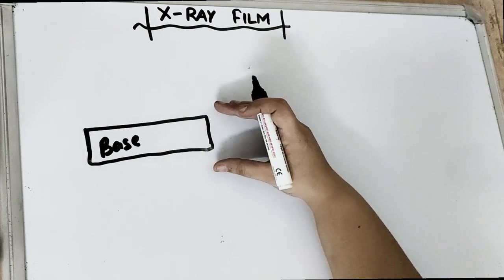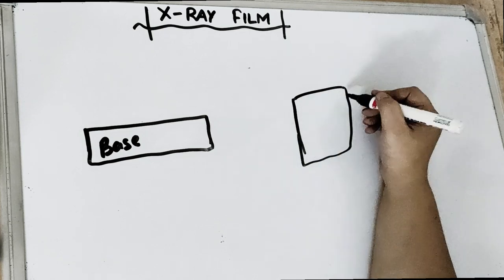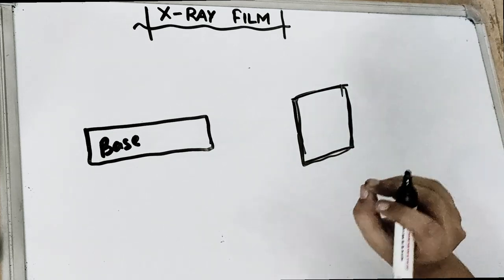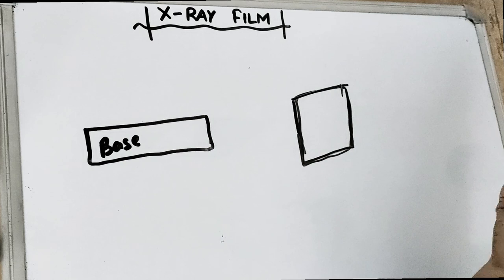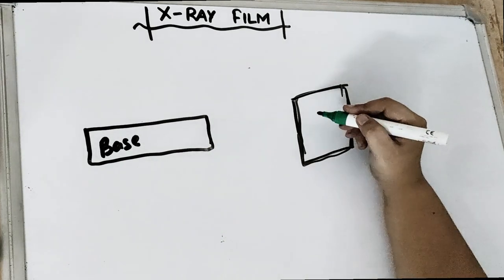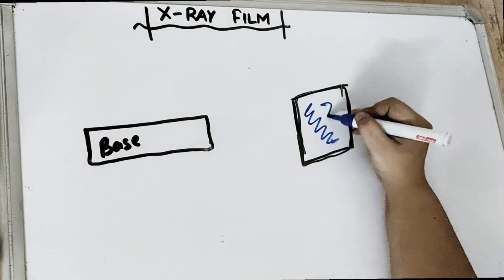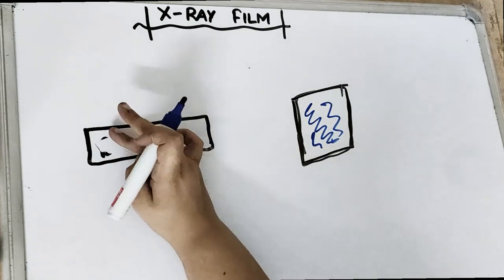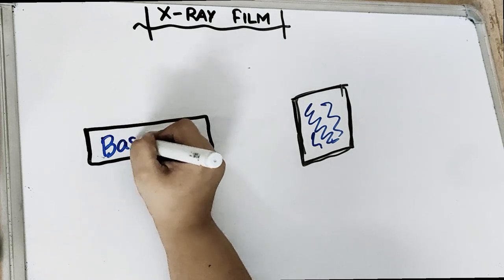Coming back to the x-ray film — so what is there? In between, there is a base. You have all seen the IOPR films and OPGs. Now if you look at the film, it is a very thin film and it has got a bluish tinge — a little bluish tint is present on the film.